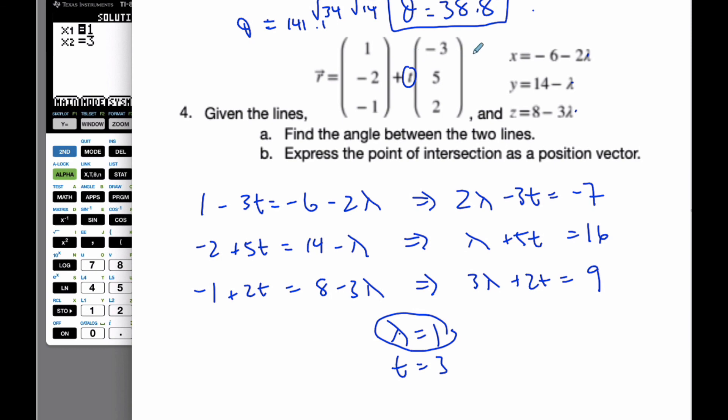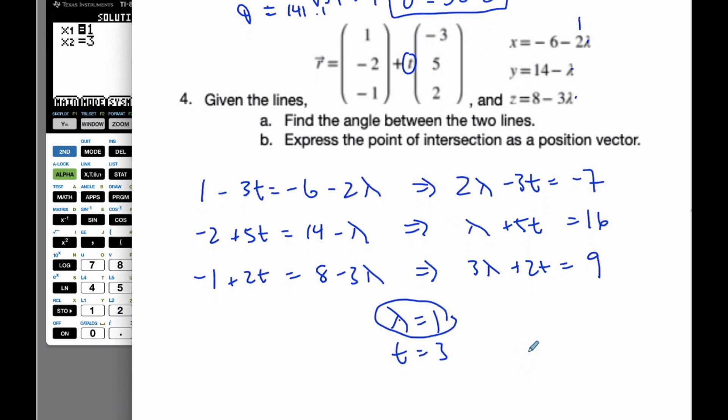So if I plug in, x will be negative 6 minus 2. Y will be 14 minus 1. And z will be 8 minus 3.